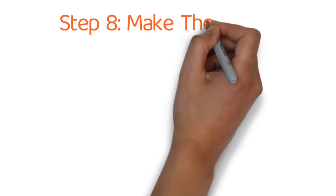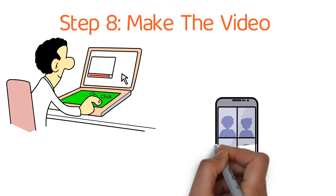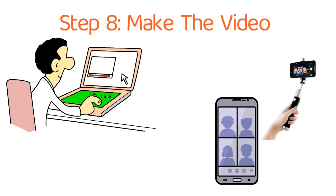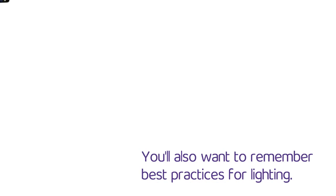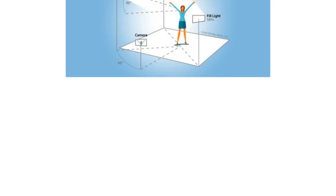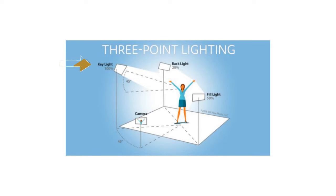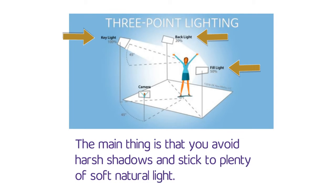Step 8. Make the video. Now is the time you've all been waiting for. Making the video. If you decided you're going to record using your smartphone, try using a selfie stick or a tripod to avoid having shaky video footage. You'll also want to remember best practices for lighting. Keep your lighting setup simple. For example, you can try using three-point lighting. Take a look at the picture on the screen. You'll notice three elements. The first element you'll see is key light. This is the main source of light. The second source of light is called the backlight. This gives depth and separates the subject from the background. And lastly, you'll notice the fill light. This gets rid of the shadows. The main thing is that you avoid harsh shadows and stick to plenty of soft, natural light.